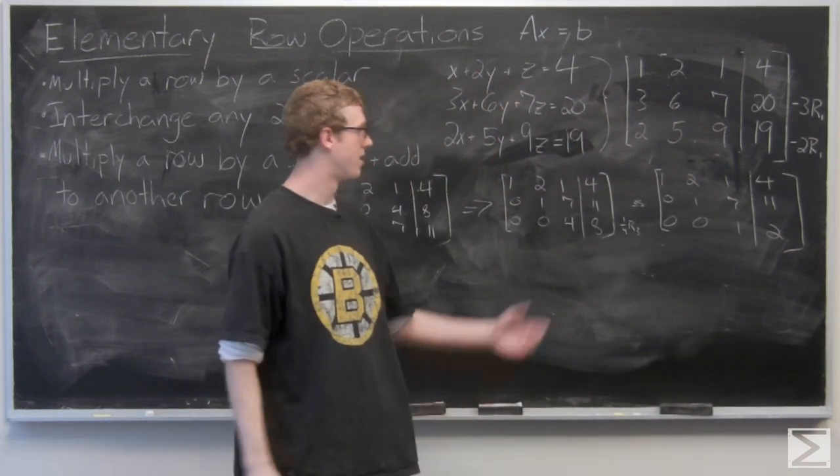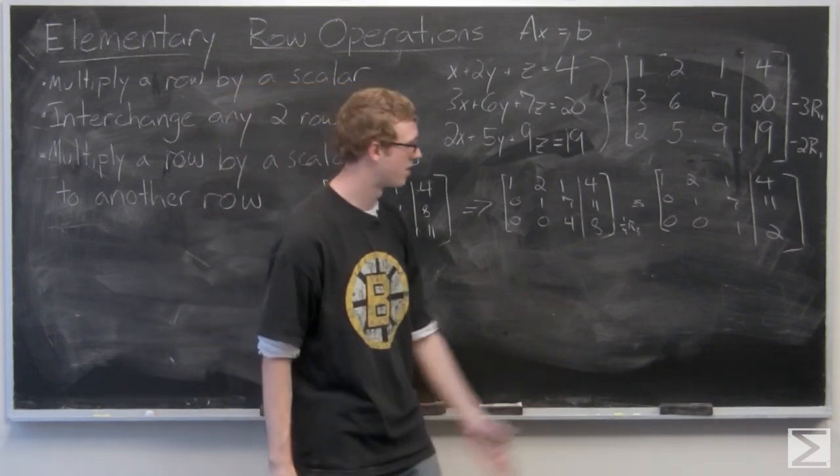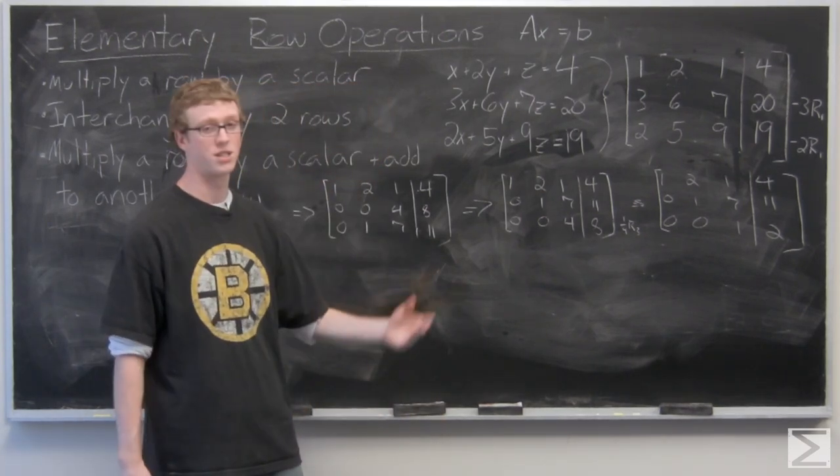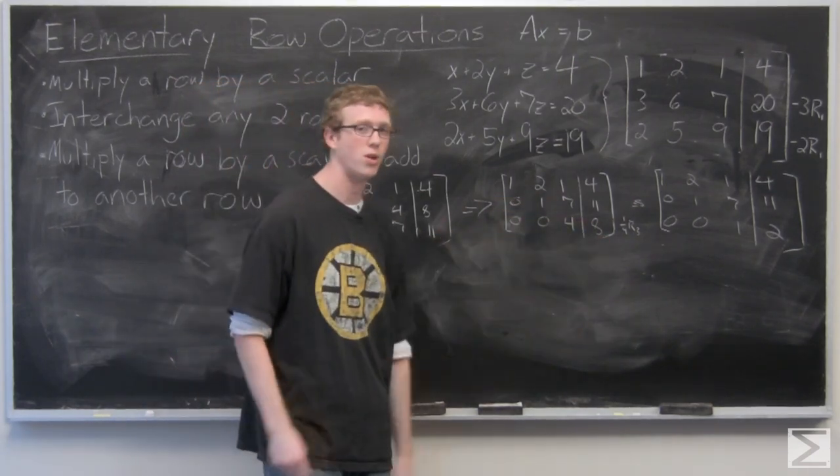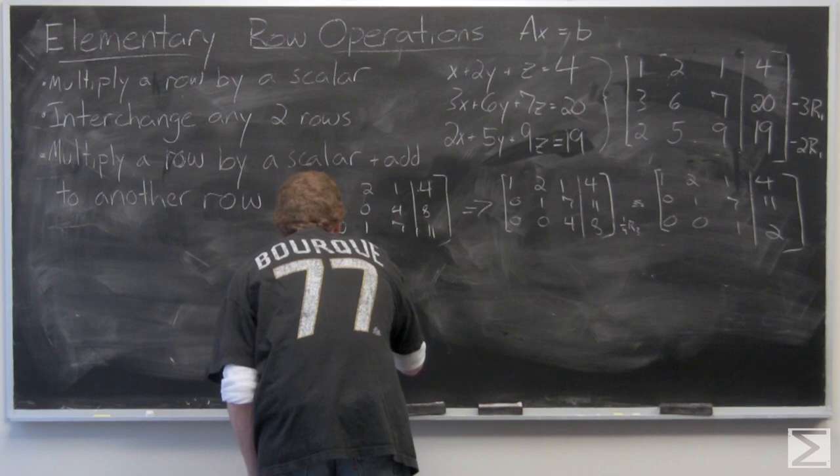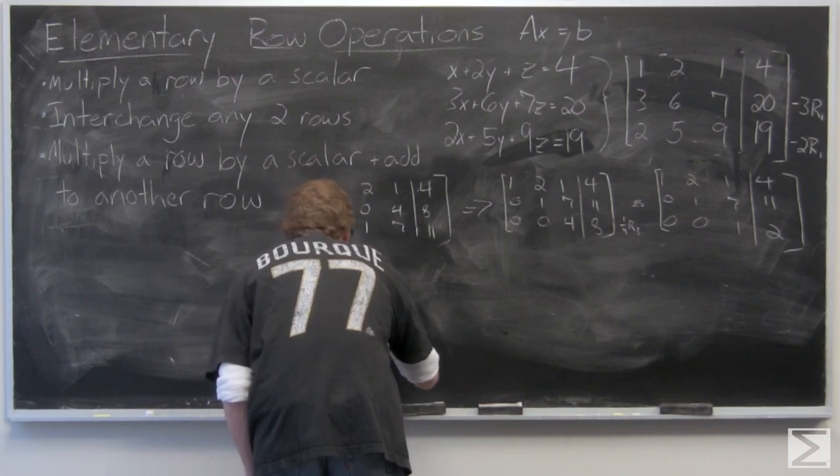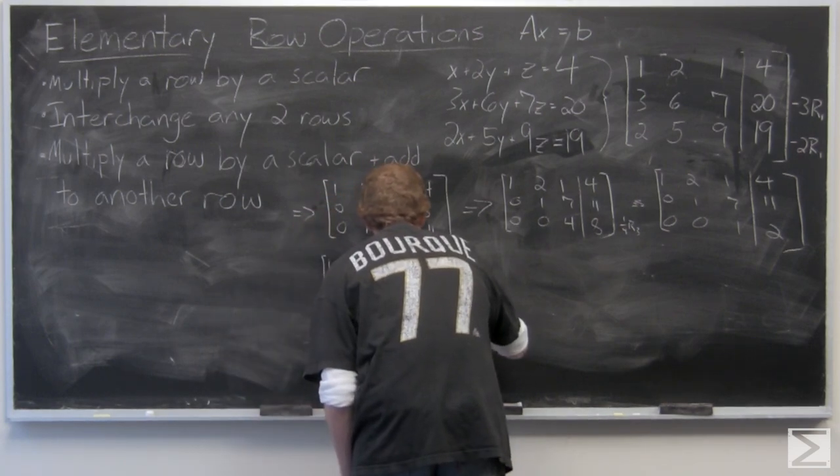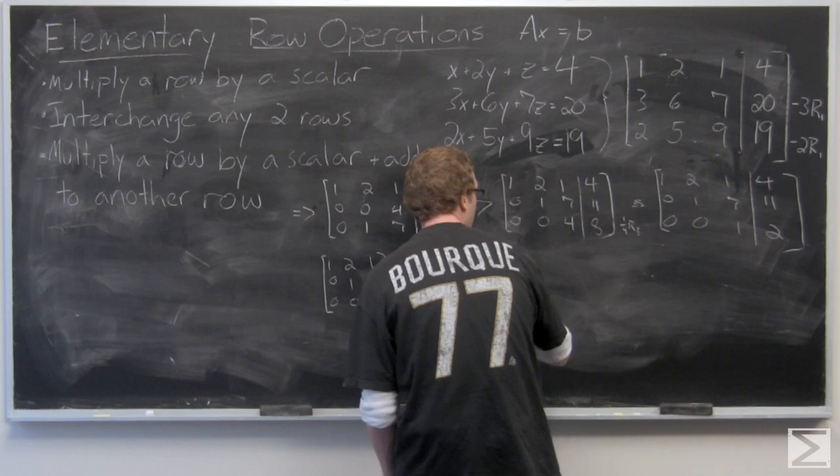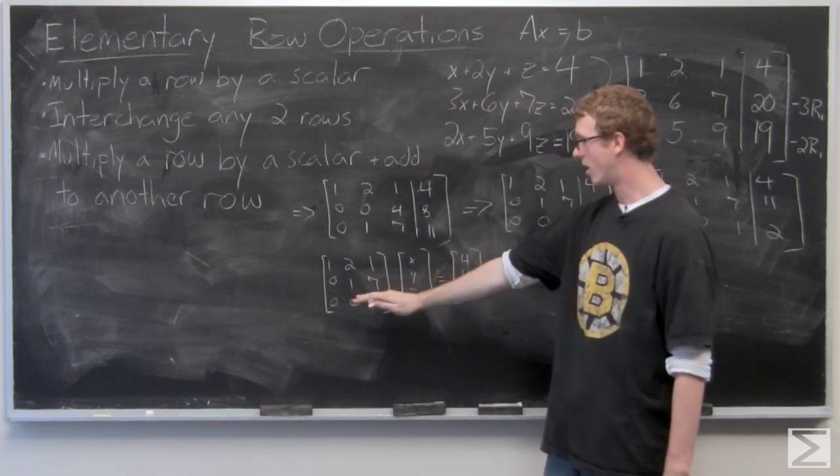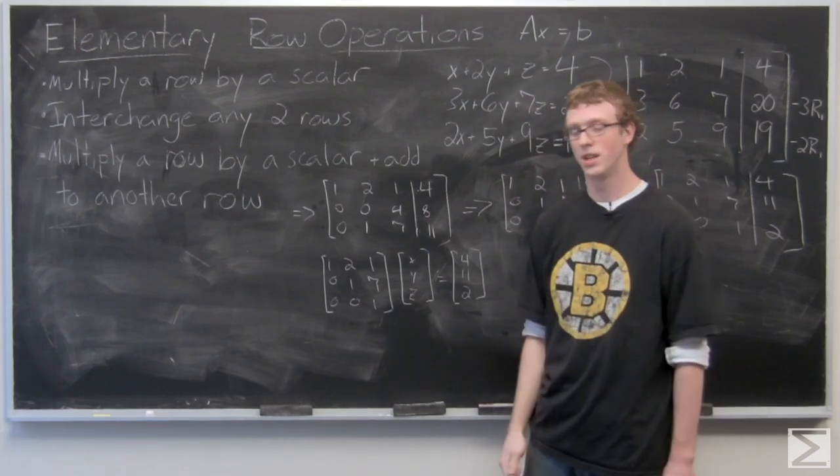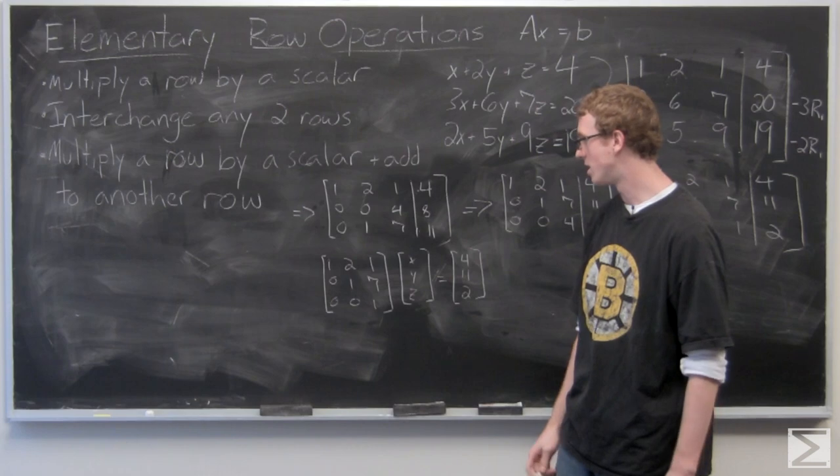Now you could just solve directly here and say that z is 2 because 1 times z equals 2. But for clarity's sake, I'm going to write out that matrix x, y, z so we can see the system of equations redisplayed once our row operations have been completed. You have the coefficients here and then the matrix x, y, z here and then the resultant matrix b, as we spoke about in the beginning, how we display systems as matrices.